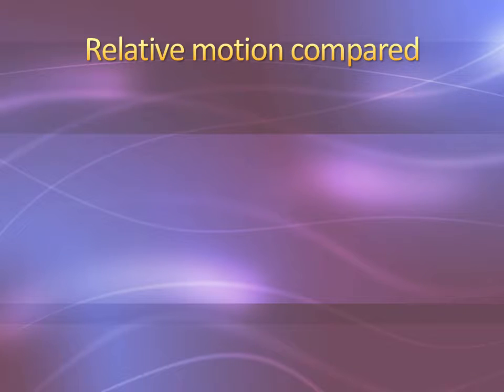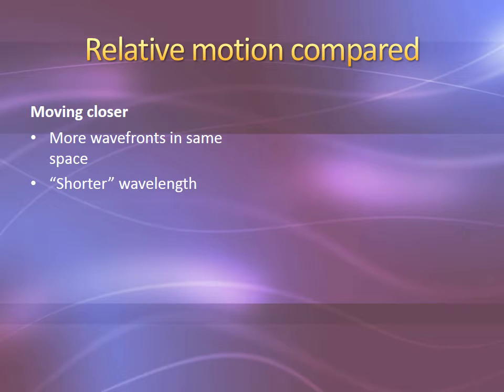So let's compare the different types of relative motion. If the two objects are moving closer together, then the observer will have more wave fronts in the same space between them and the source. And so you will have what appears to be a shorter wavelength, which gives you a higher frequency and therefore a higher pitch.